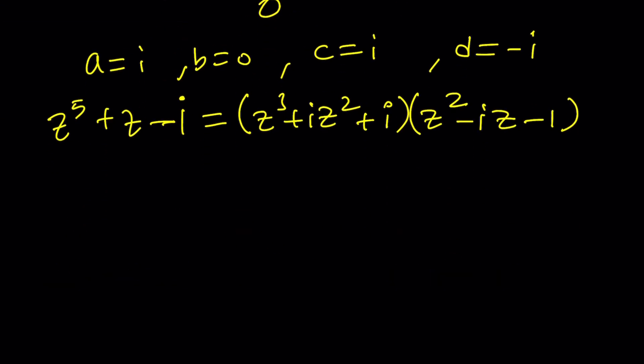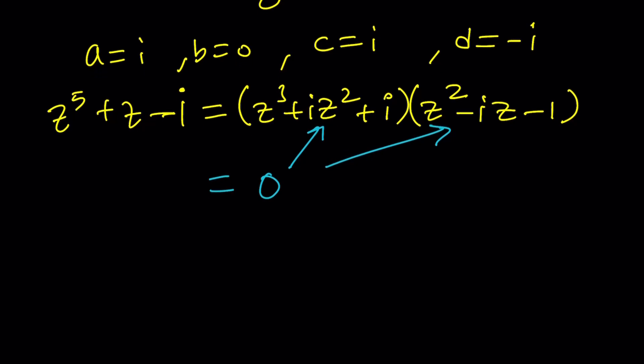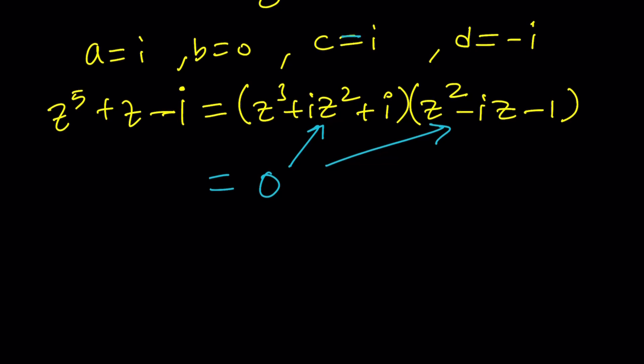Now, solving the cubic is obviously going to be a great deal. You can get rid of the z squared, use Cardano's, Ferrari's, Tartaglia's, whatever, whichever Italian guy you want to name it with or after. You can use that method or the cubic formula and find the roots. And one of the roots is actually pretty interesting because it happens to be a multiple of i.